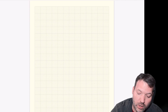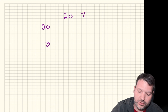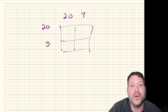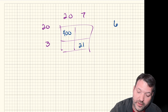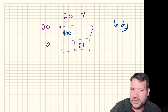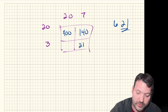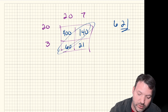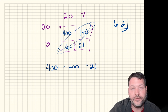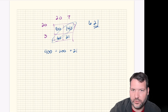Now let's understand why the trick works using the area model — the box method for multiplication. Take 23 times 27. The 20s multiplied give 400. The 3 times 7 gives 21 — that's where the 21 comes from. Then 20 times 7 is 140 and 20 times 3 is 60; those two middle boxes add to 200. So 400 plus 200 plus 21 gives you 621.